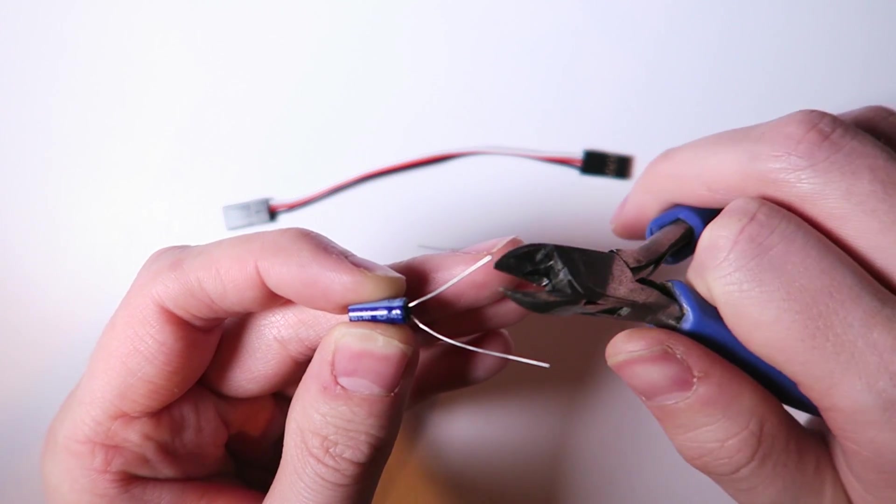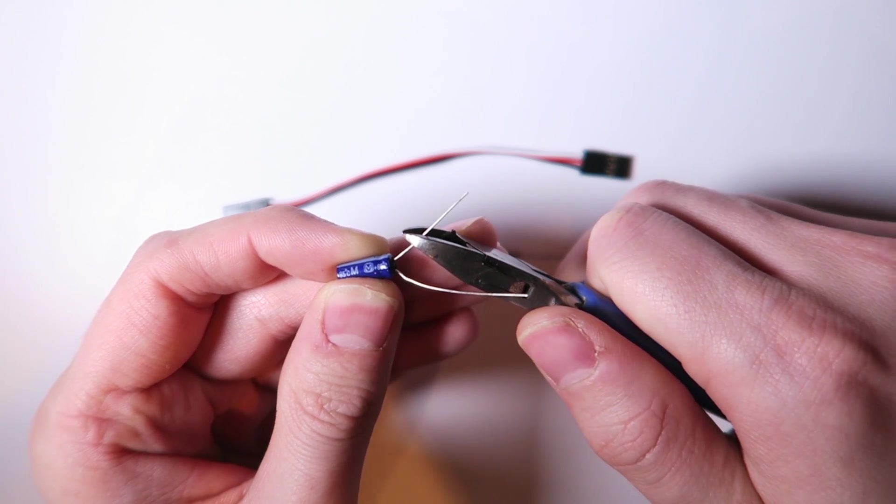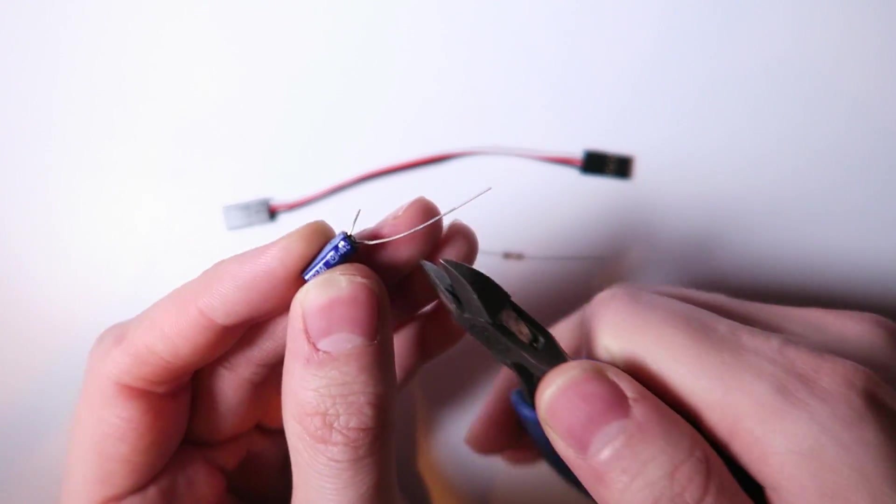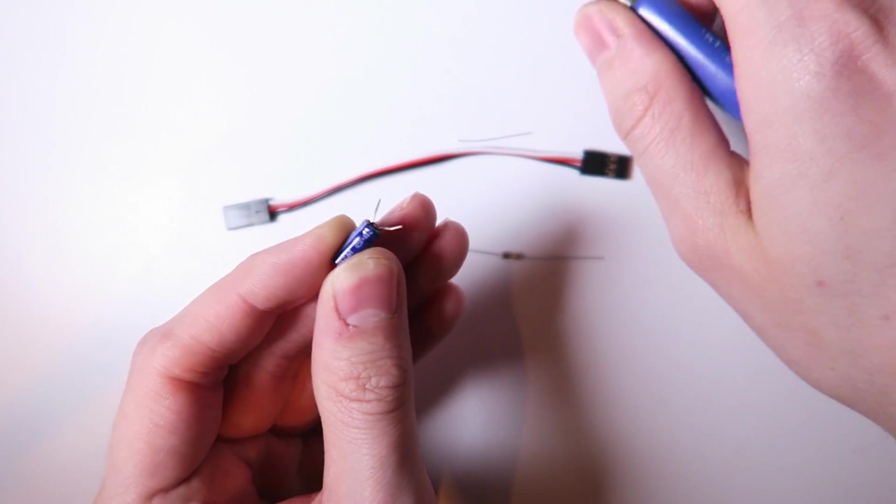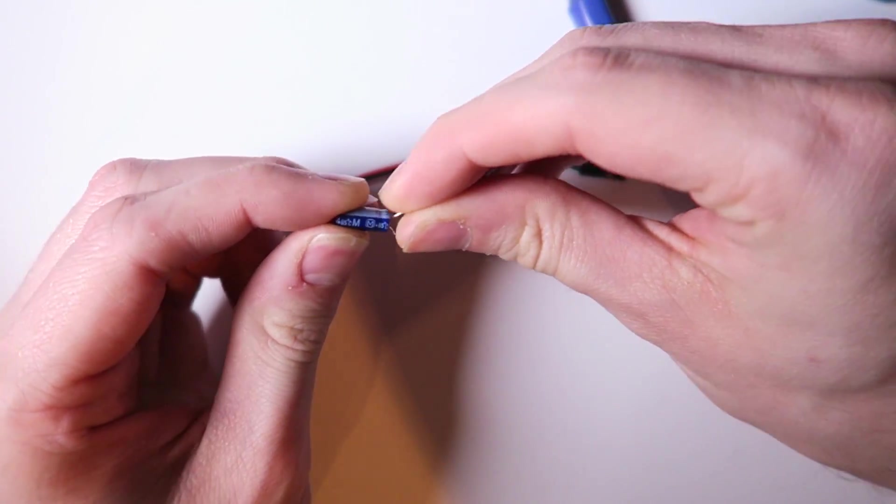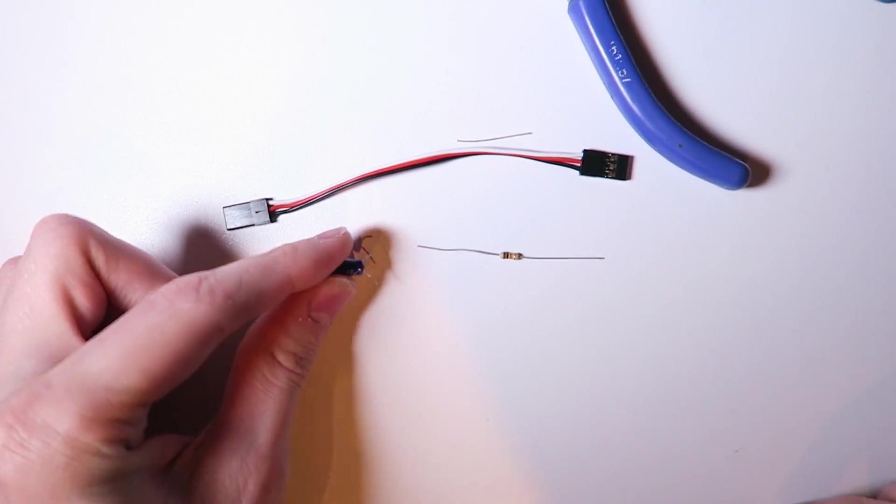The first thing that I'm going to do is remove these legs on the capacitor so that they're a bit shorter so that we have a nice neat job. I'm just going to spread them out a bit so they don't touch while soldering.